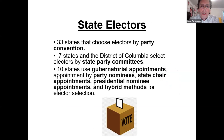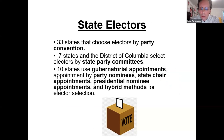There's a lot of talk about state electors and what that's all about. Each state has a different way of choosing them: 33 states choose theirs by party convention, seven states and the District of Columbia do it by state party committees, and 10 states do it in various different ways. Each party selects a group of electors, and if their party wins the vote for that state, they cast the electoral votes.